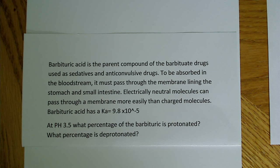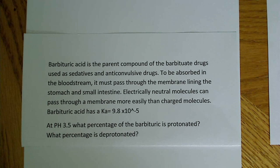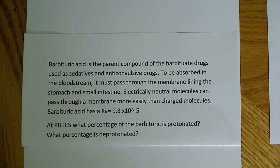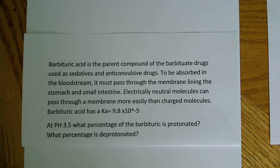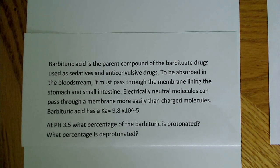Electrically neutral molecules can pass through the membrane more easily than charged molecules. Barbituric acid has a Ka of 9.8 times 10 to the negative fifth. At a pH of 3.5, what percentage of barbituric is protonated and what percentage is deprotonated?